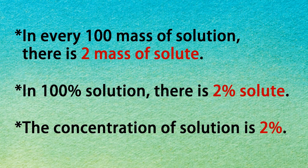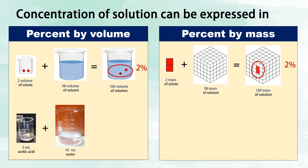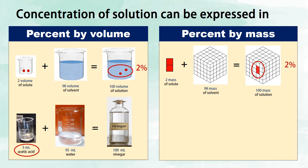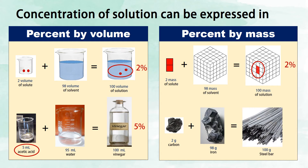Therefore, the concentration of solution is 2%. Another example under percent by volume: 5 ml of acetic acid plus 95 ml of water equals 100 ml of vinegar. Since the volume of solute is 5 ml, the concentration of solution is 5%. The example for percent by mass: 2 g of carbon plus 98 g of iron equals 100 g of steel bar. Since the mass of solute is 2 g, the concentration of solution is 2%.